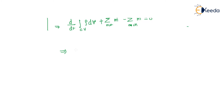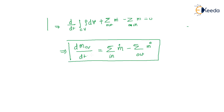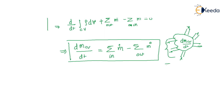We can write that dMCV/dt equals the net rate of mass inflow minus the net rate of mass outflow. If there are multiple inlets and outlets, this is the summation of all mass in minus summation of mass out, which gives the rate of change of mass within the control volume.